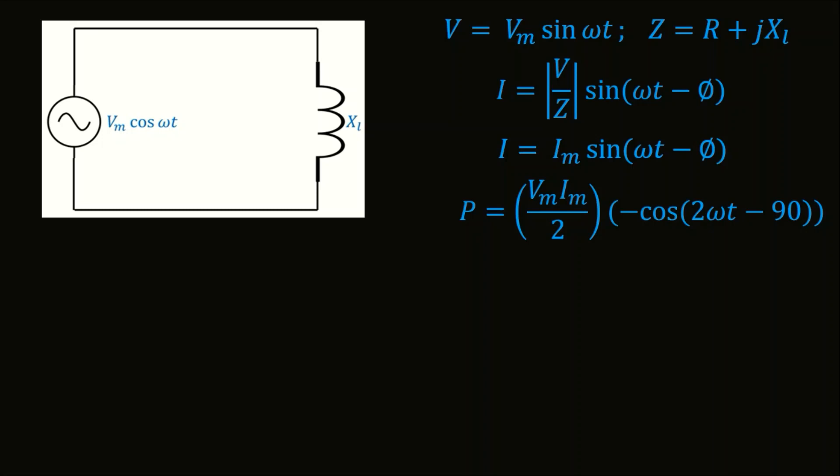Substituting that term equals to zero will lead us to this formula of power: Vm Im by 2 minus cos 2ωt minus 90. Let's build an intuitive understanding for power function of inductor circuit, simply how the function of this P will look like.